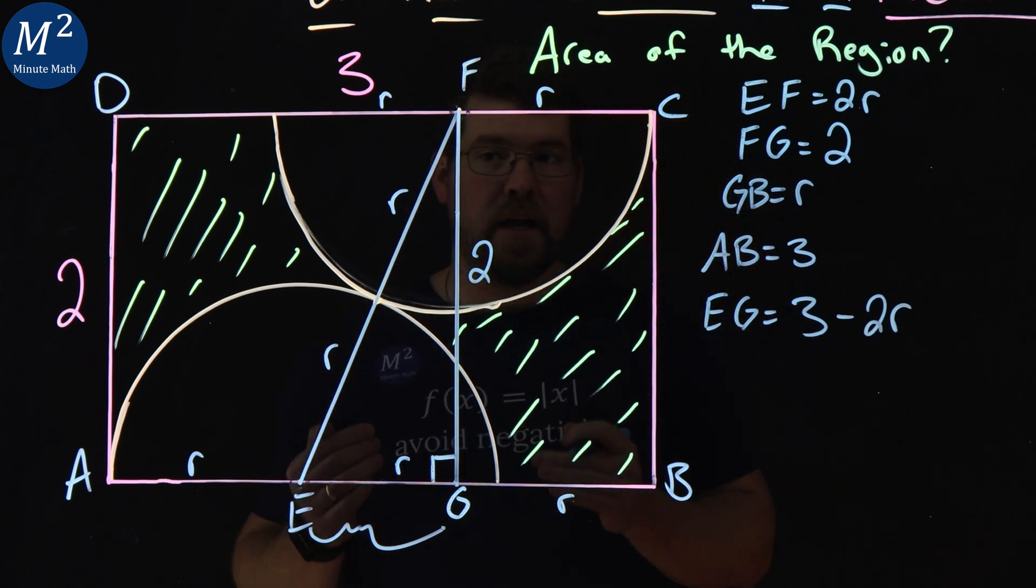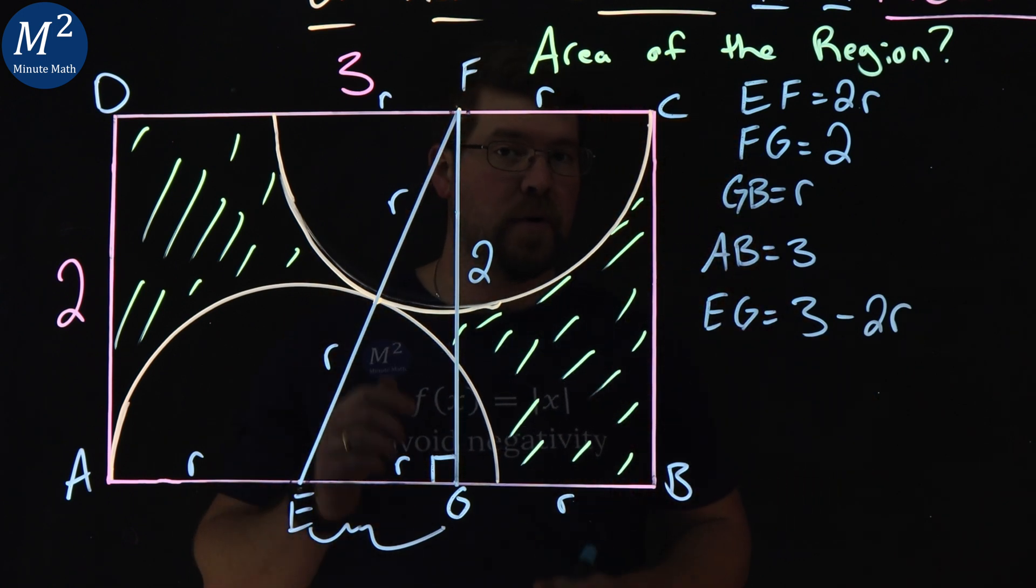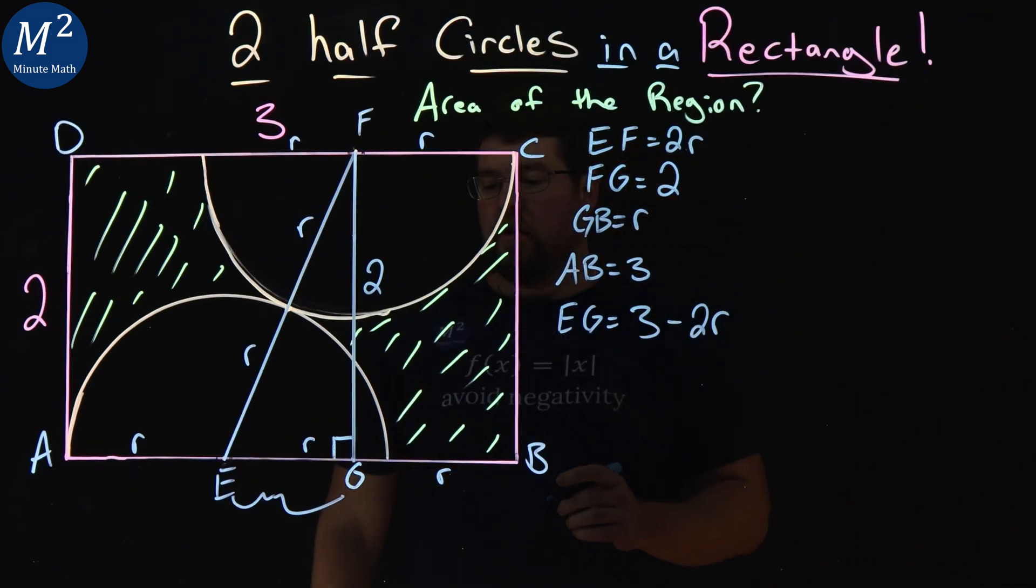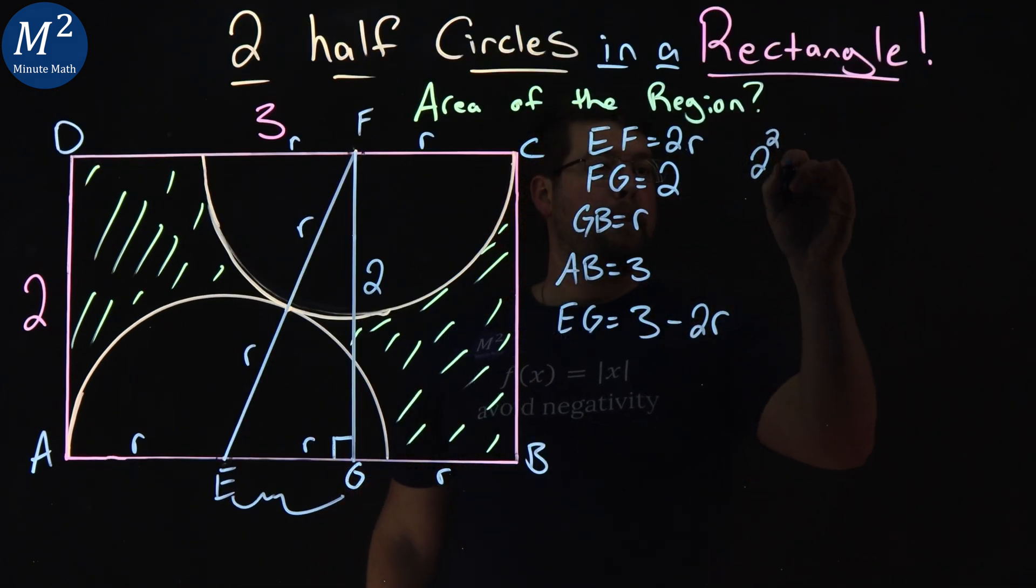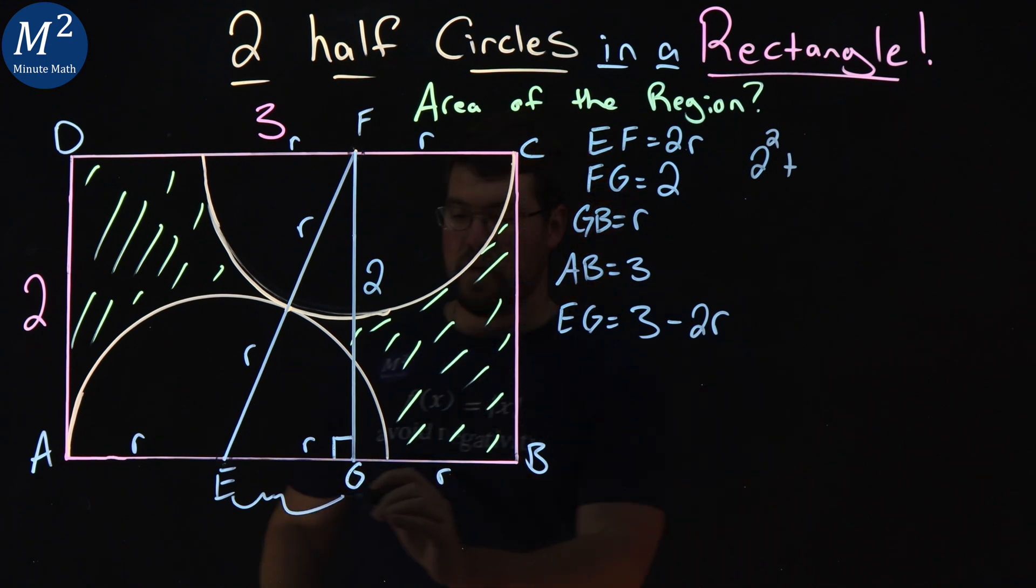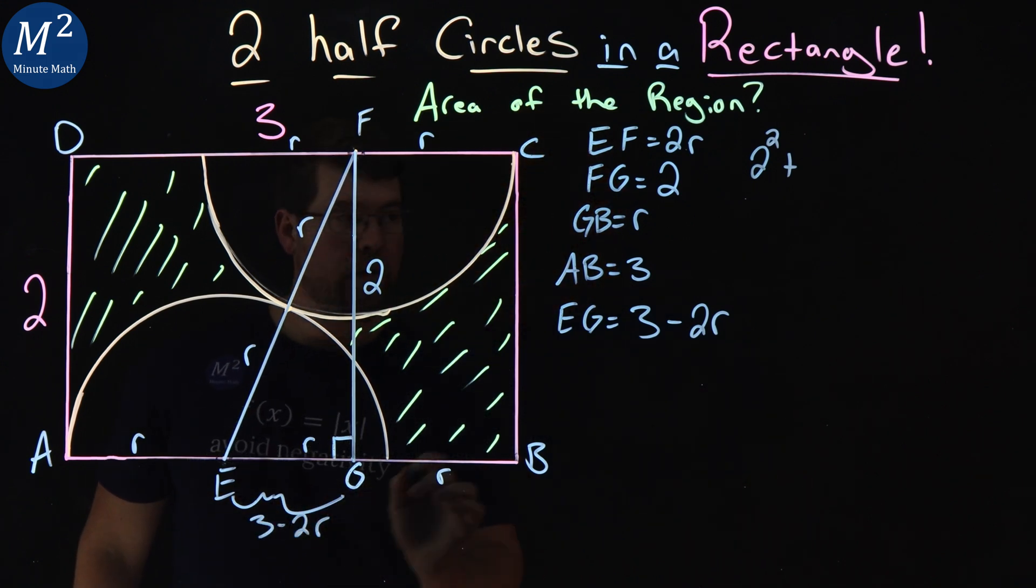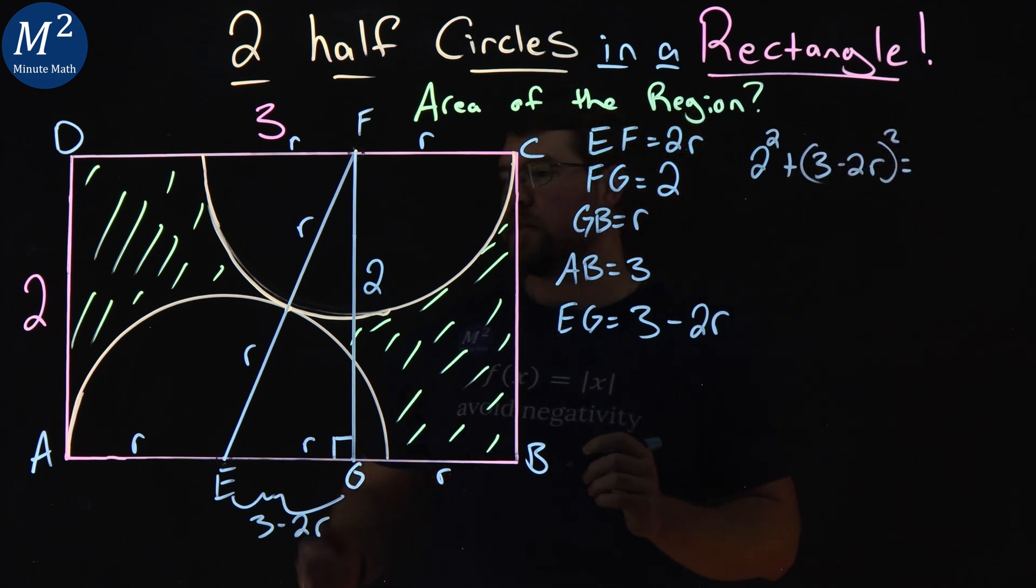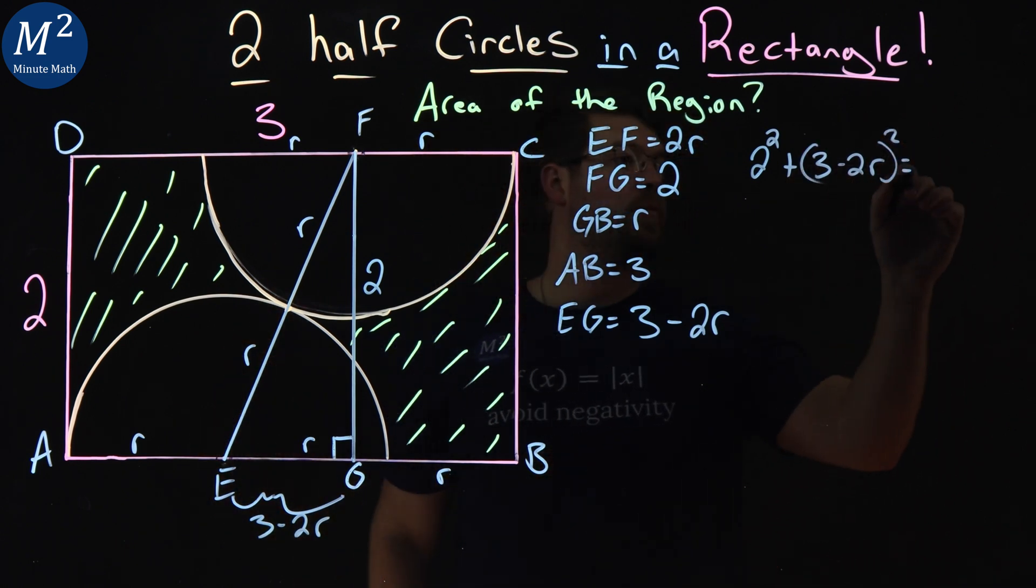And now we have enough for the Pythagorean theorem. A squared plus B squared equals C squared. So, 2 squared plus 3 minus 2R all squared equals our hypotenuse, 2R squared.